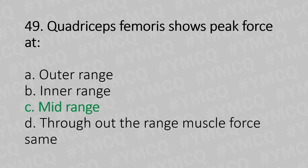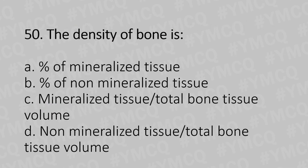Moving to our 50th question. The density of bone is: Option A: Percentage of mineralized tissue. Option B: Percentage of non-mineralized tissue. Option C: Mineralized tissue over total bone tissue volume. Option D: Non-mineralized tissue over total bone tissue volume.